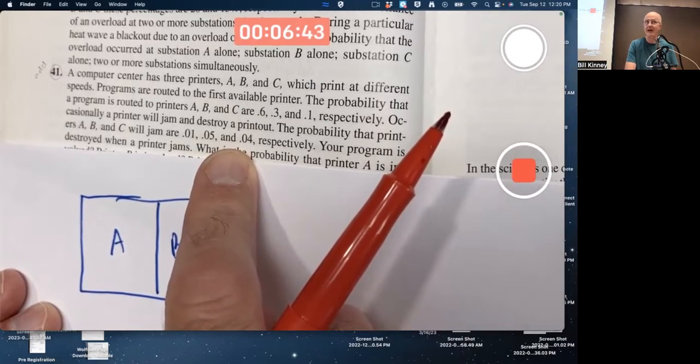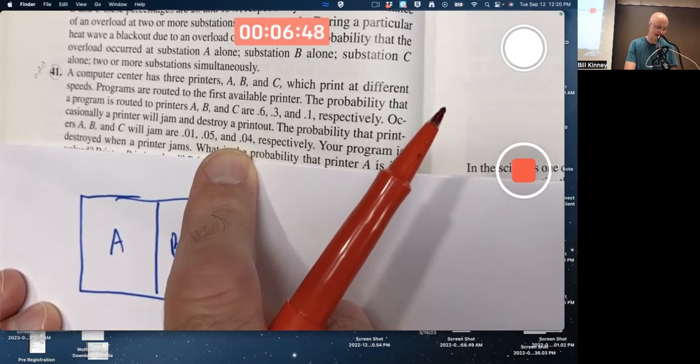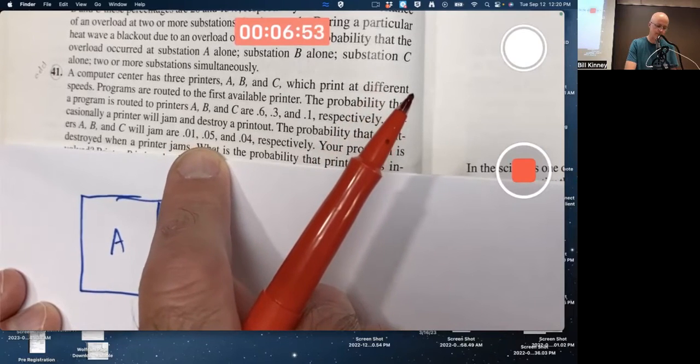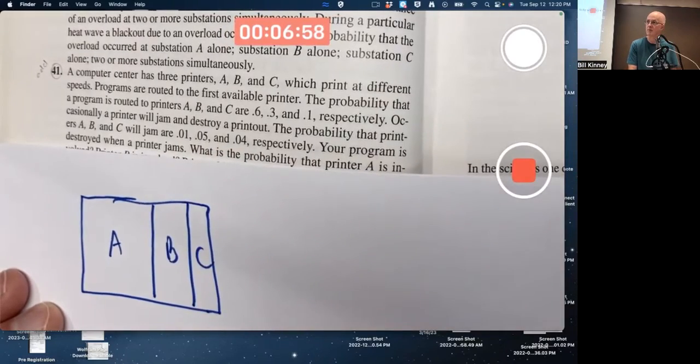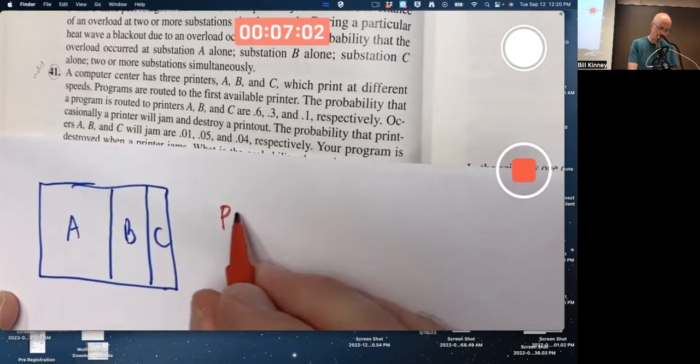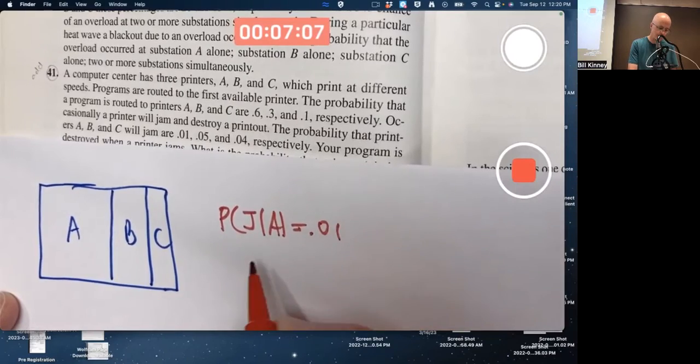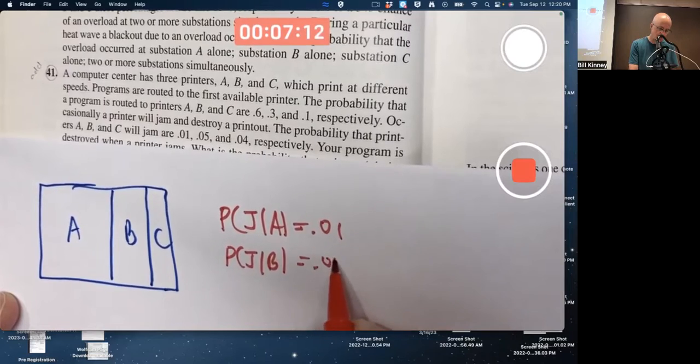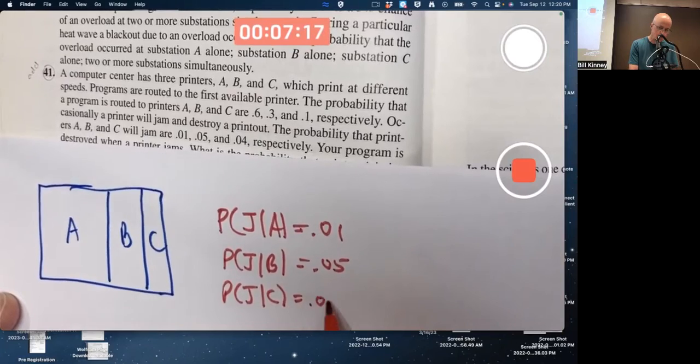You don't see the phrase given that either, but that needs to be understood. If it's sent to A, the probability that it will jam is 0.01. If it's sent to B, the probability of jamming is 0.05. If it's sent to C, that's the probability of jamming. These are conditional probabilities. You could say probability of jamming given or if it's sent to B is 0.05, and the probability of jamming given that it's sent to printer C is 0.04.